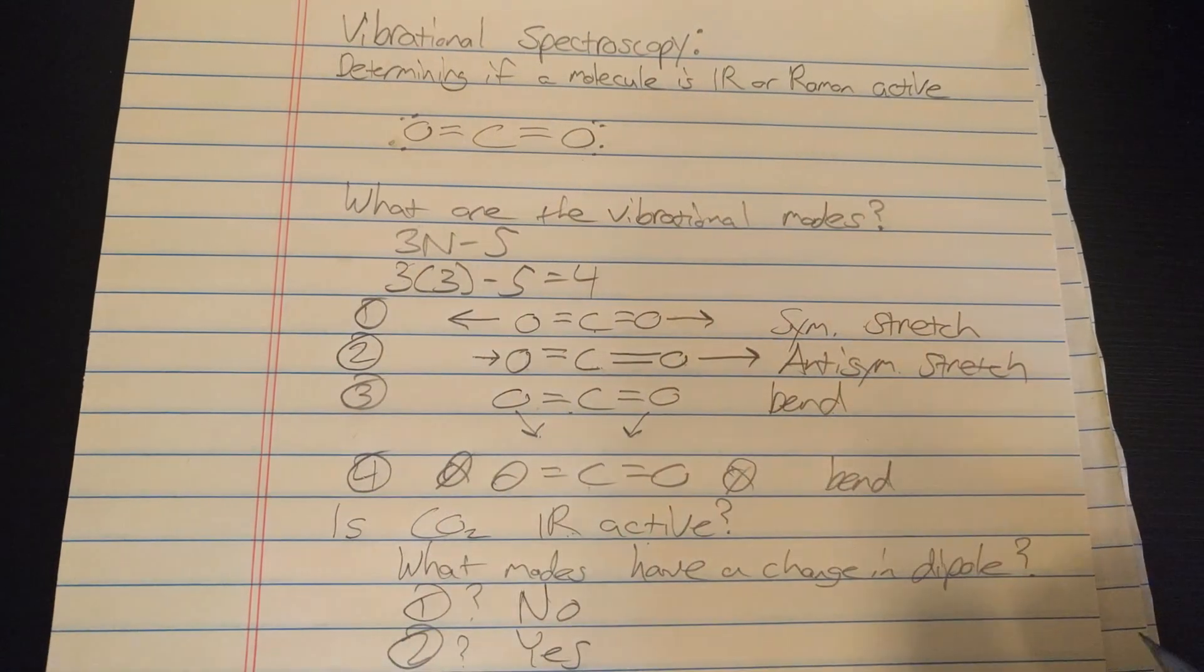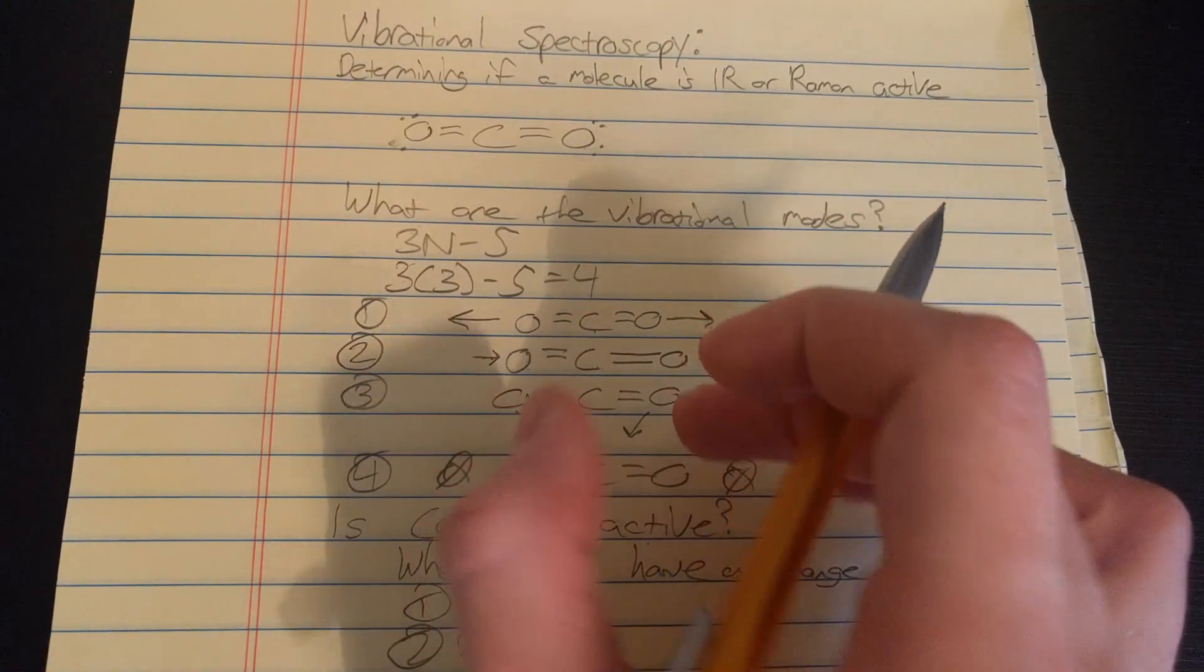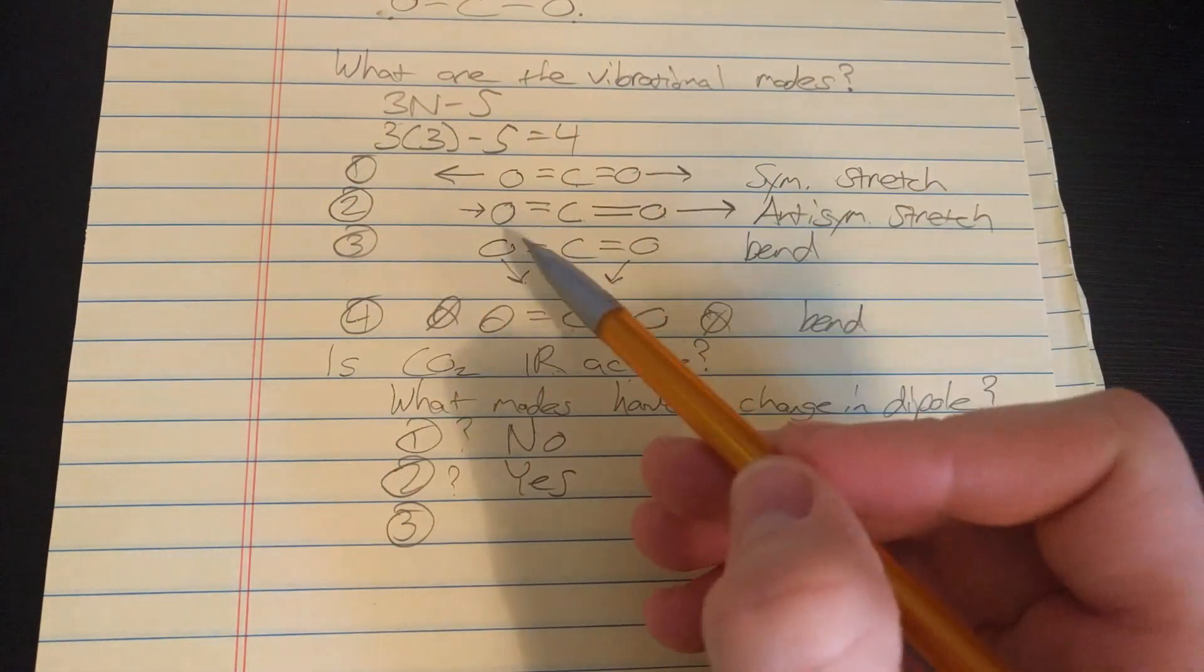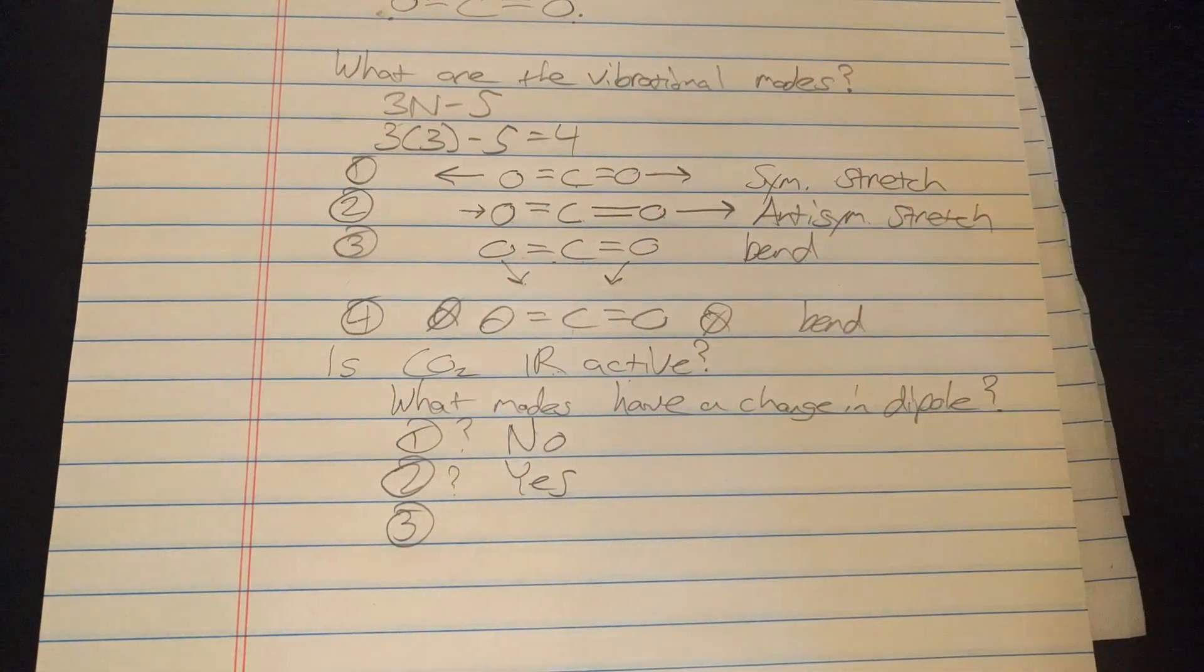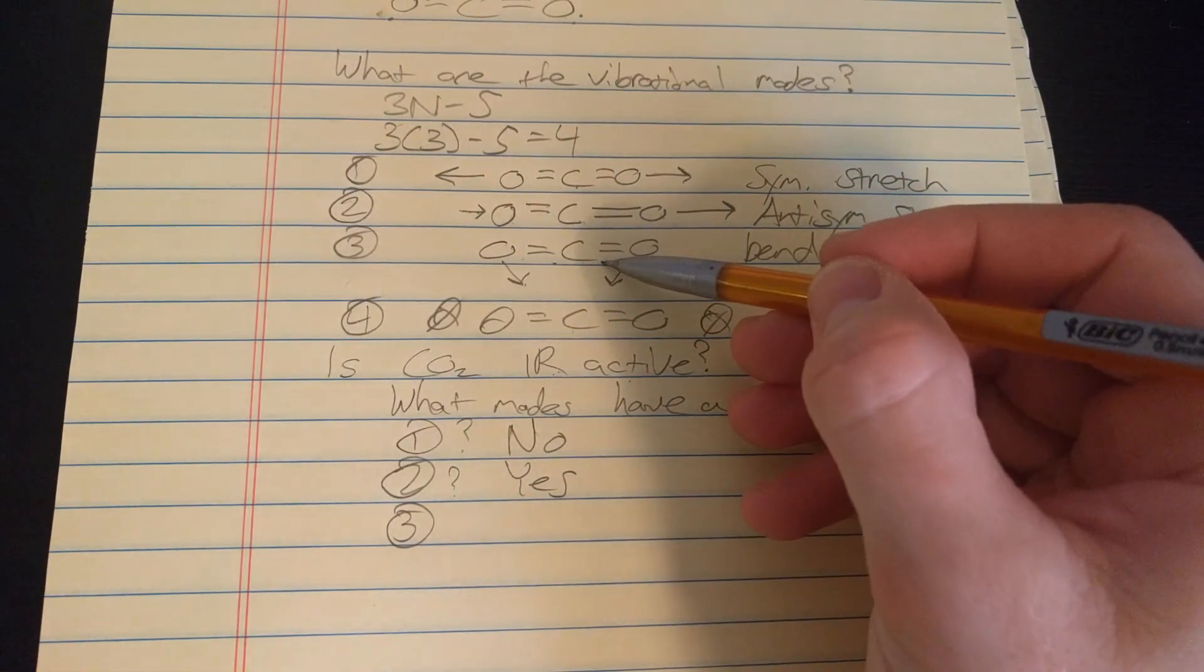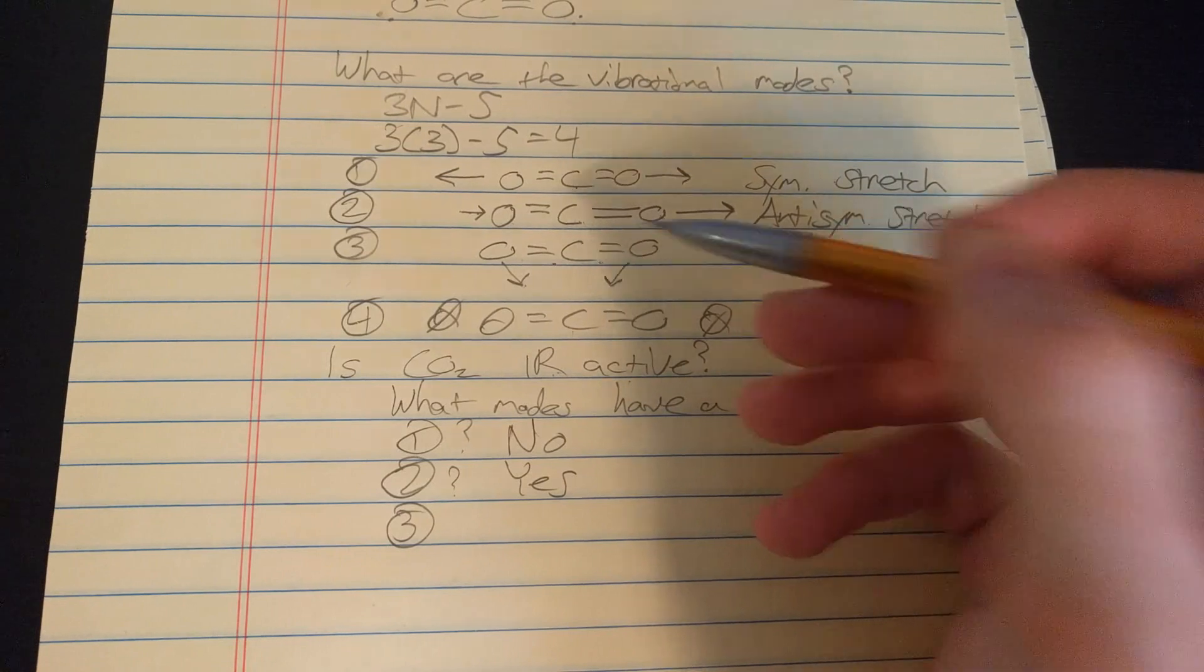Mode three? Well you're bending two negatively, well relatively negatively charged atoms down and the positively charged ones up. So again the answer is yes. The dipole would point down in that case, in the case where I've drawn it here.